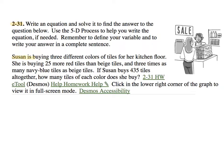Susan is buying three different colors of tiles for her kitchen floor. She is buying 25 more red tiles than beige tiles and three times as many navy blue tiles as beige tiles. If Susan buys 435 tiles altogether, how many tiles of each color does she buy?